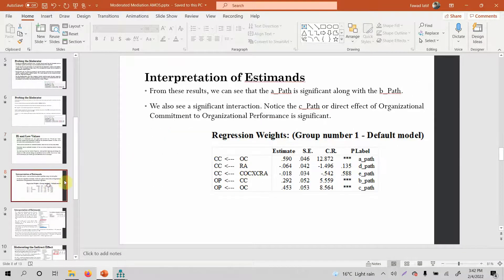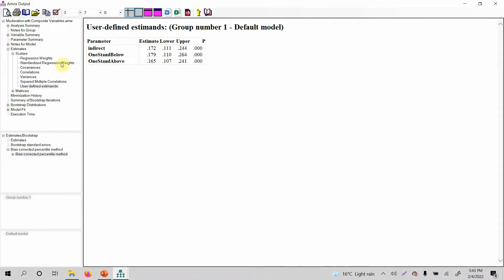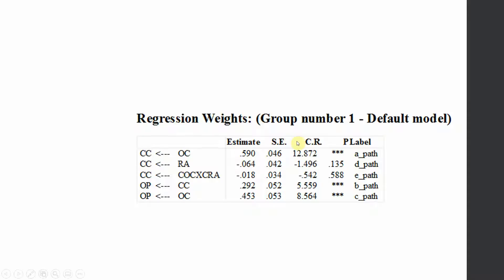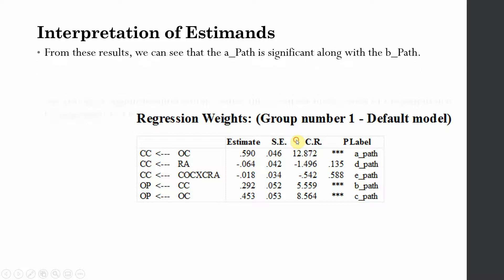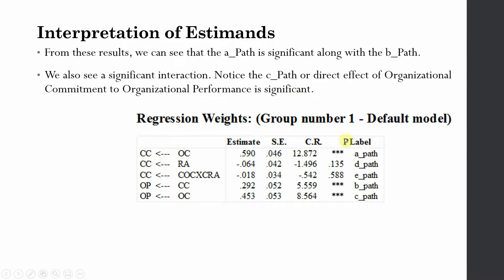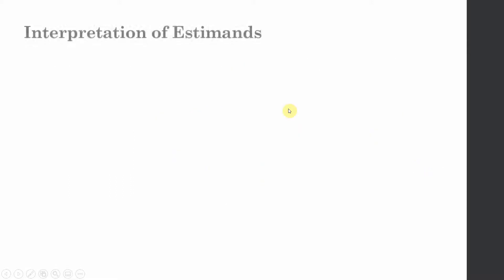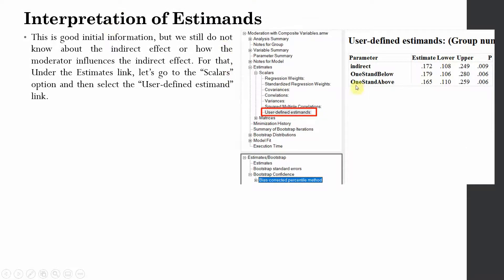Moving on, let's interpret the results. I'm going to move between this presentation and the output to make things more detailed and easy to understand. From the results, we can see that your A path, B path, and C path are all significant. This information gives us the indirect effect. We know that at the higher level of the moderator the indirect effect is significant, and at the lower level of the moderator it is also significant. But we still do not know how the moderator influences the indirect effect.